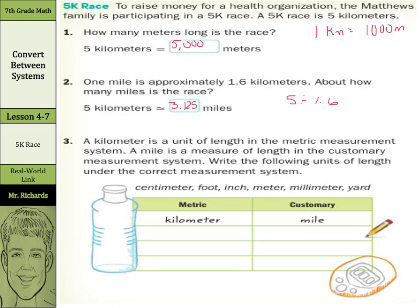Now, a kilometer is a unit of length in the metric measurement system. A mile is a measure of length in the customary measurement system. Write the following units of length under the correct measurement system. Well, centimeter is metric. Foot is customary, what we use in the United States. Inch is also customary. Meter, metric. Millimeter, metric. And yard is customary.